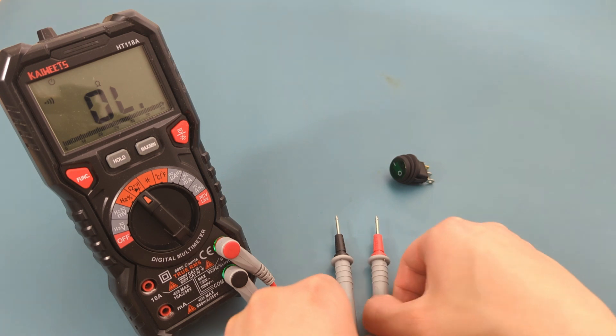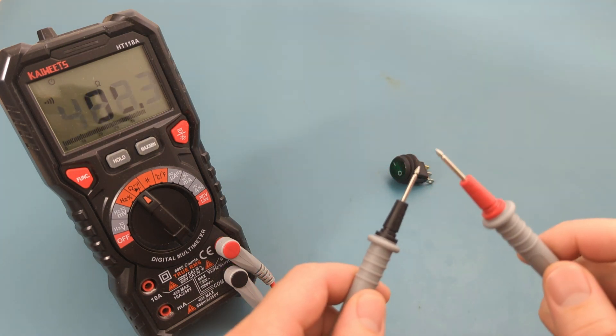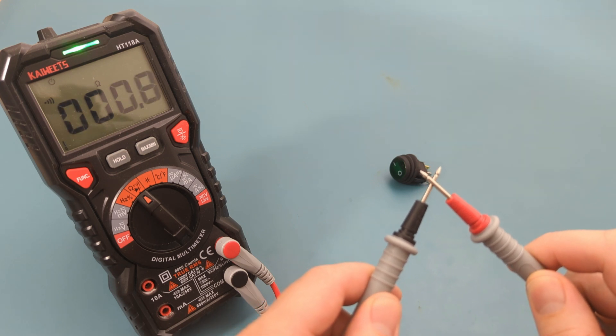Before testing the switch, verify the multimeter is working by touching the probe leads together. If you hear a beep, there is continuity, and the multimeter is working correctly.